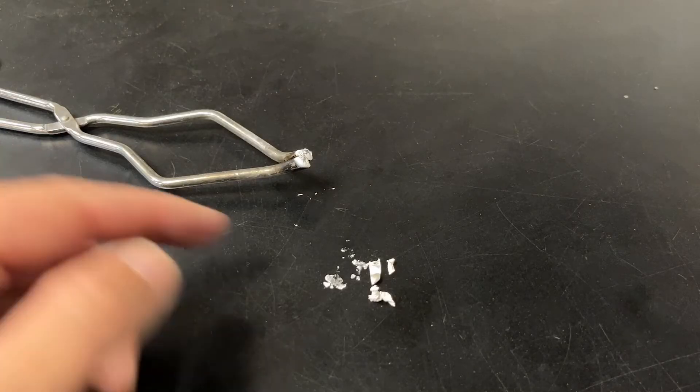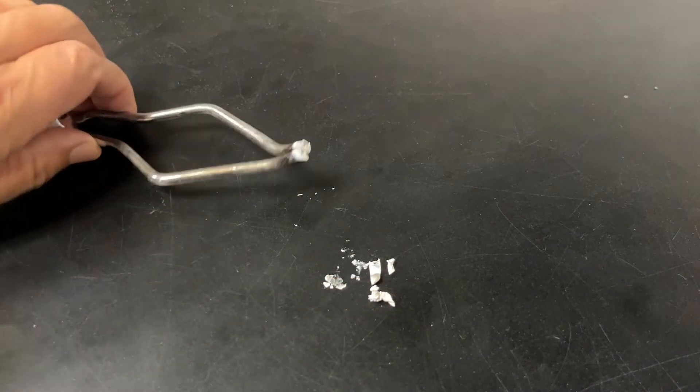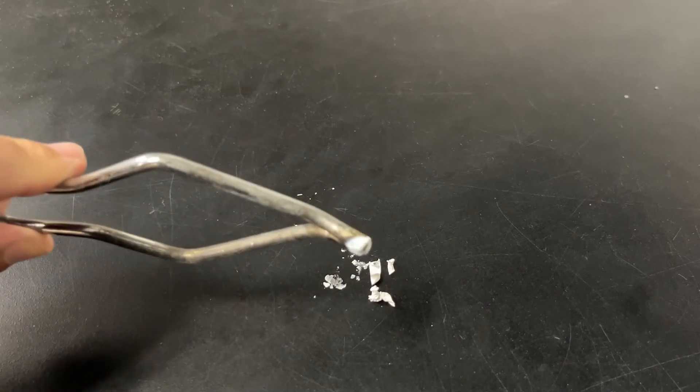And here's all that we have left from burning the magnesium. It turned into instant rust. If you look at the tongs, they have a white coating on them.